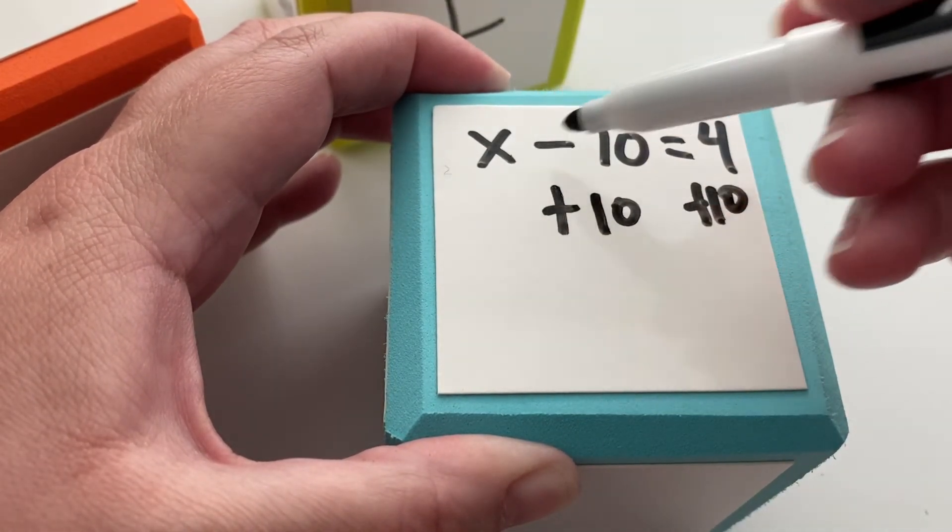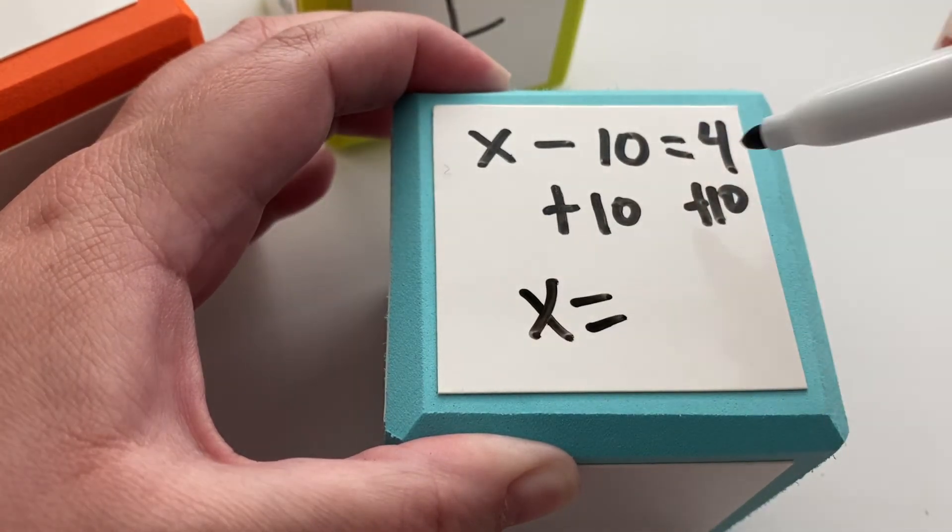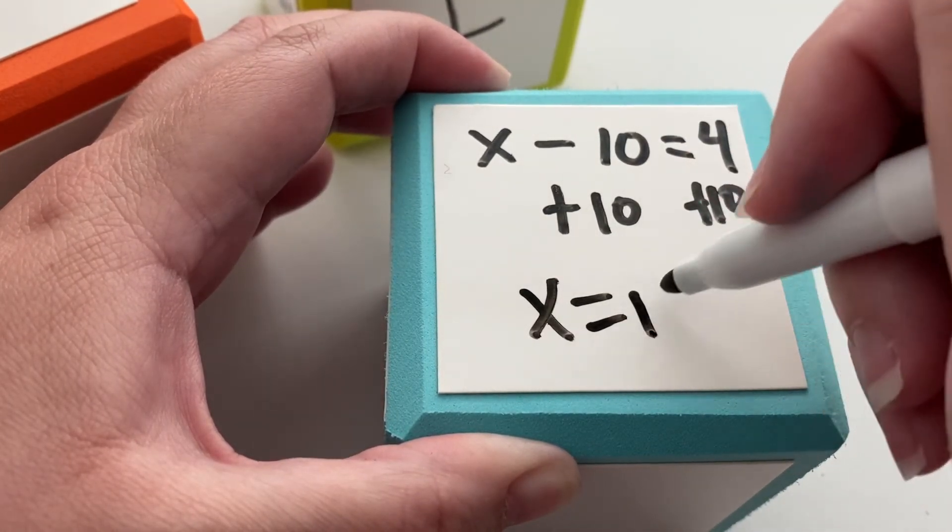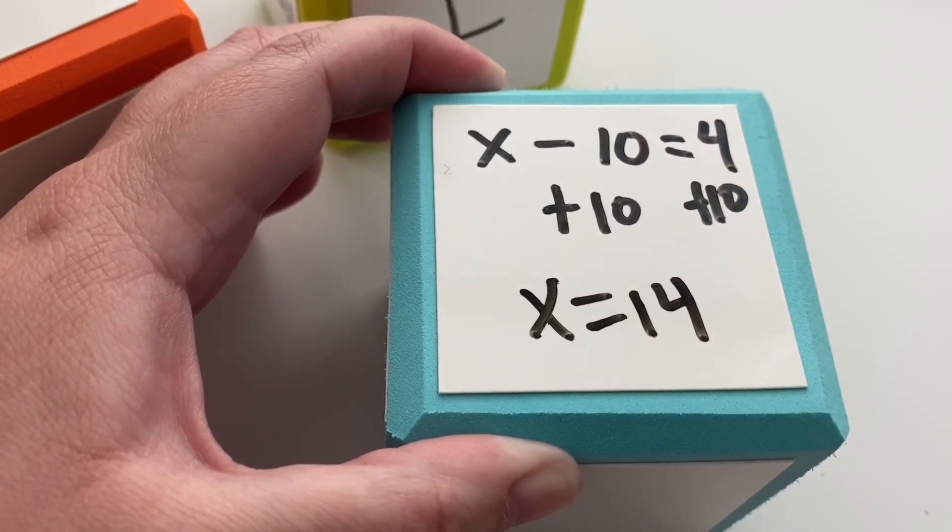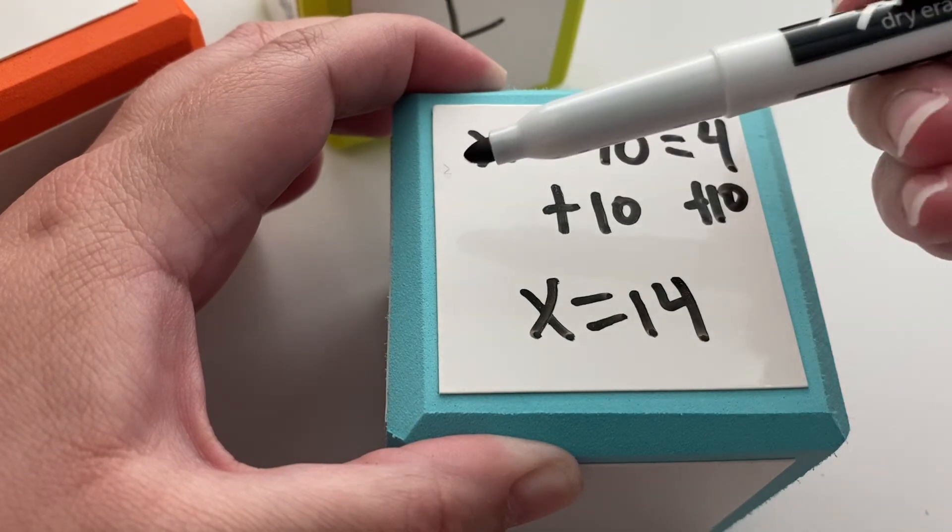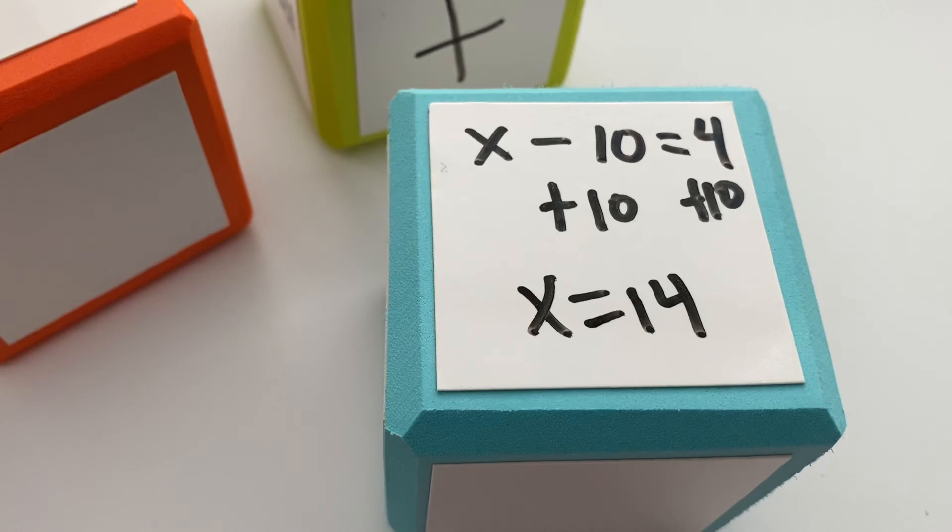So negative 10 plus 10 is 0. So now this side is just x. And 4 plus 10 is 14. So x equals 14. And that's our answer. You can always take this number to go back and check. 14 minus 10 equals 4, just to make sure that your number sentence is correct.